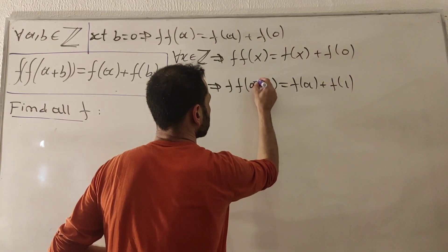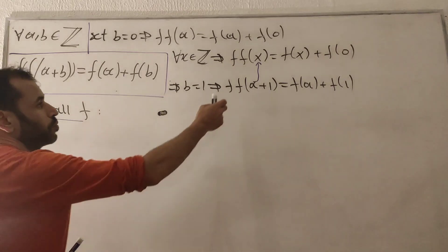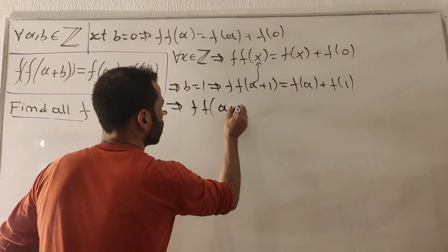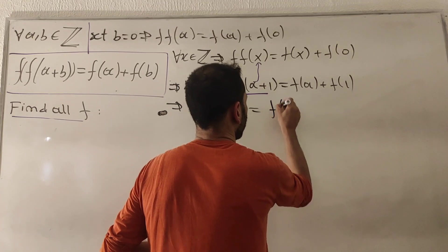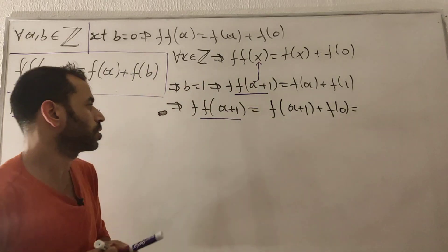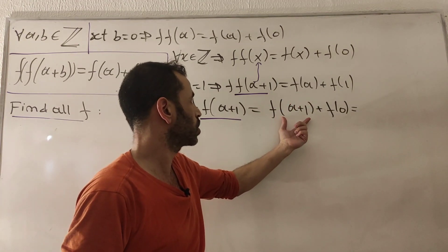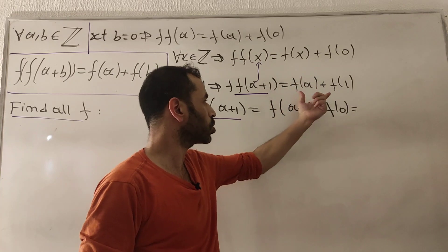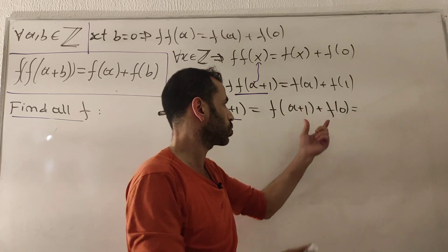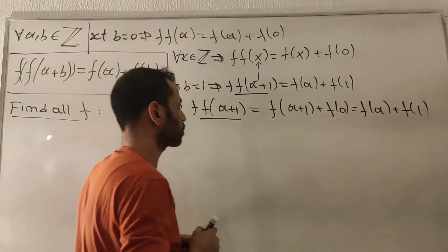Next, we plug in x = a+1 into the first equation f(f(x)) = f(x) + f(0). This gives f(f(a+1)) = f(a+1) + f(0). Since both expressions equal f(f(a+1)), we can equate them: f(a+1) + f(0) = f(a) + f(1).